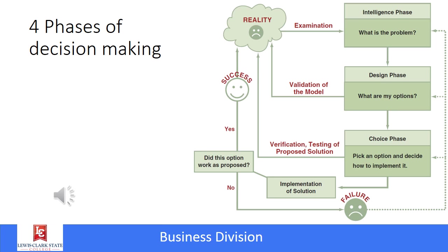Once they've done that, they're ready to make the choice. In the choice phase, the solution or course of action that seems best is selected and implemented. In the implementation phase, the decision results are evaluated. If the problem is solved or the opportunity is seized, it's successful; if not, it's a failure and they have to evaluate new options and go through the process again.